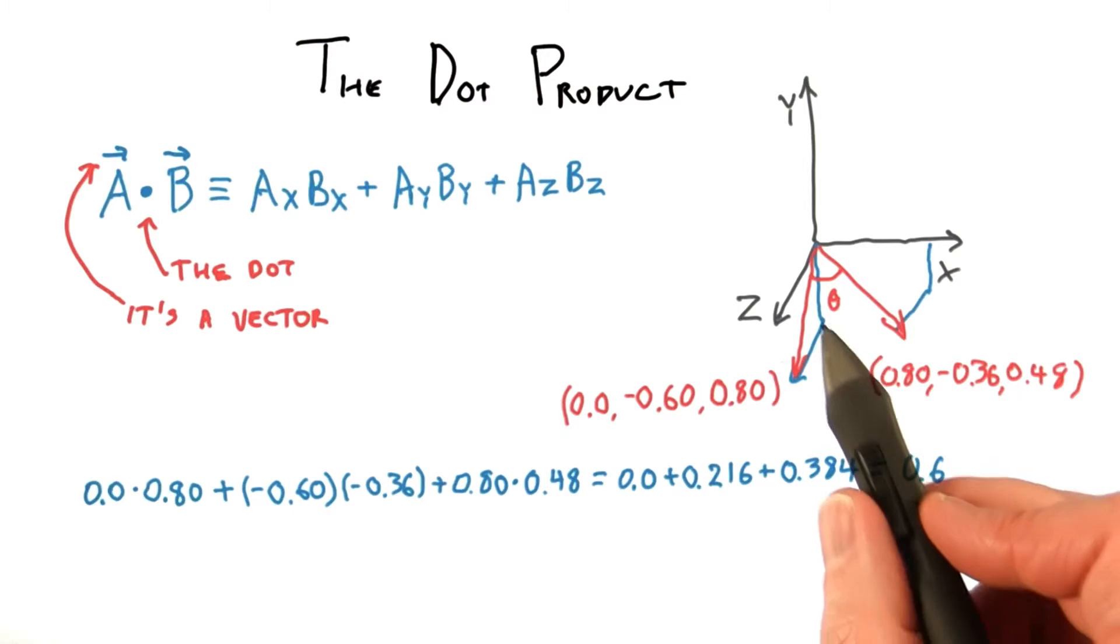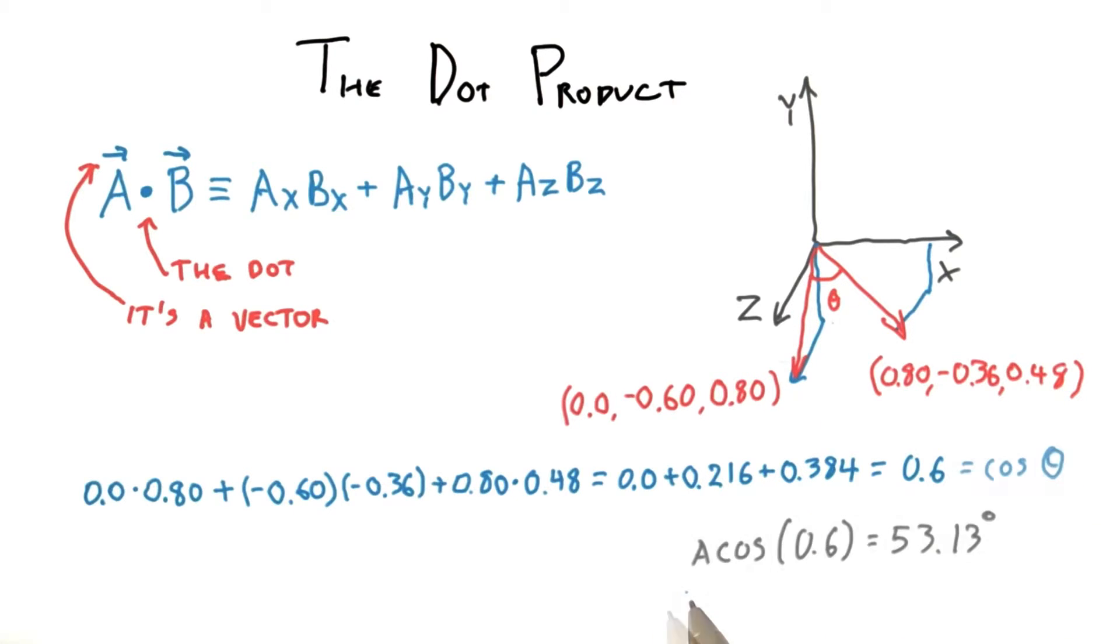So this is the cosine of the angle between these two vectors. Out of curiosity, if we take the arc cosine of this value, 0.6, we get 53.13 degrees.